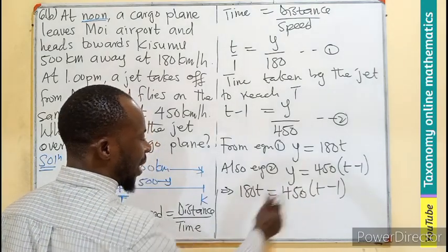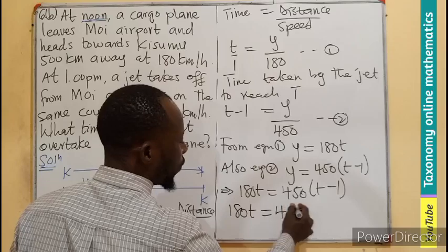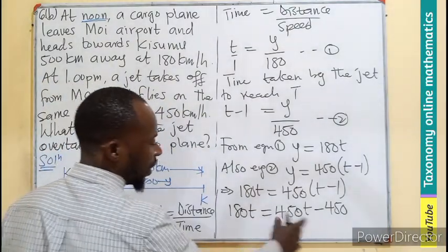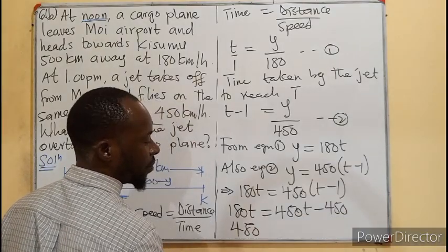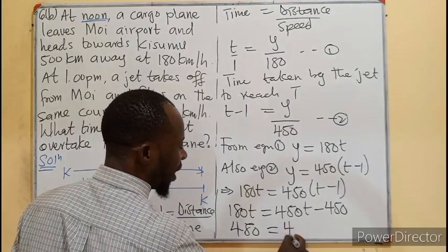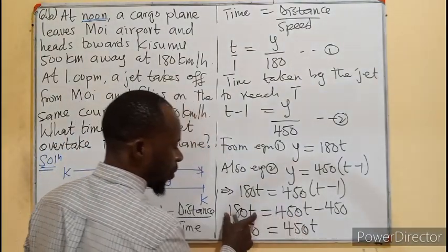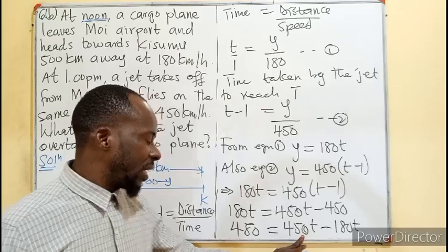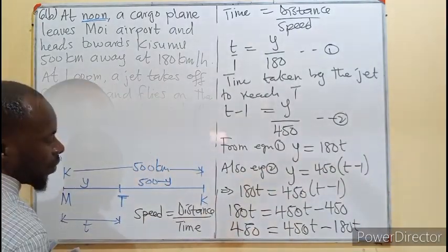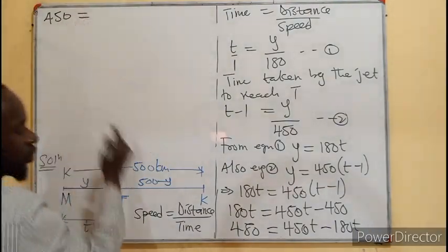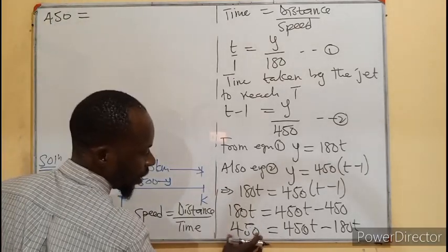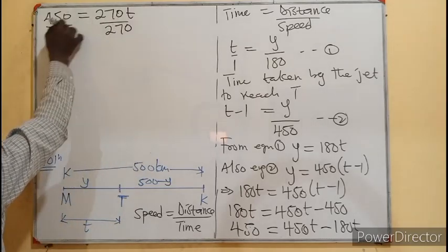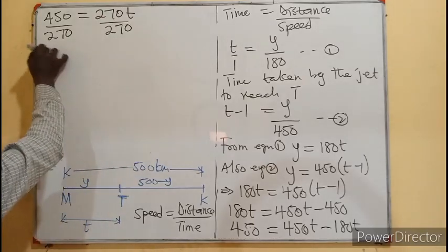We try to expand the second bracket. 180T equals 450T minus 450. Let this T go and bring the 450 as positive. Negative crossing the equal sign become positive. We maintain the 450T, then we bring the positive 180 to become negative 180T. We can easily subtract this, then divide by that answer which will be the coefficient. 450 equals 450 minus 180, I believe we get 270T.